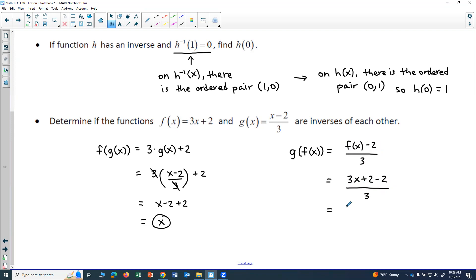So I have (3x plus 2 minus 2) in the numerator and my 3 in the denominator. 2 minus 2 is 0, so I get 3x over 3, which is x.